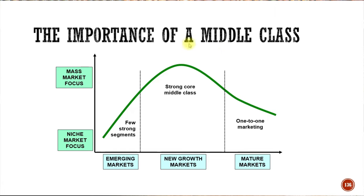Every nation needs a strong middle class — they are the ones who consume the most in the economy. In emerging markets there are very few strong segments, while in growth markets there's a strong core middle class driving consumption. In mature markets, marketing becomes more one-on-one. The internet and apps like Instagram, Facebook, and Amazon now target users individually based on their interests and household data.